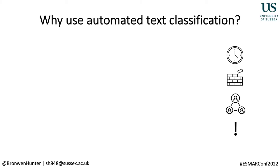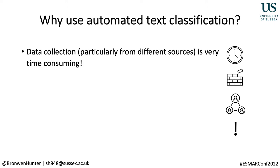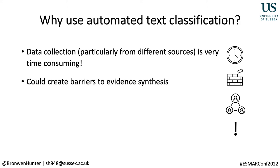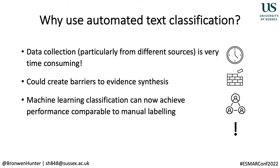So why use automated text classification? Identifying relevant data sources to include in an evidence synthesis, particularly when looking at different sources such as academic literature and grey literature, can be one of the most time-consuming stages. Given increasing publication rates, this could create barriers to evidence synthesis. As a result, researchers are increasingly using automated text classification methods, often based on machine learning, to conduct the article screening stage. Some of the more state-of-the-art machine learning algorithms can actually achieve performance comparable to manual labelling.